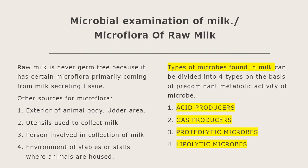Raw milk is generally never germ-free. It is never the case that raw milk is sterile, because it has certain microflora primarily coming from milk secretory tissue. Other sources of microflora are the exterior of the animal body, especially the udder area where the mammary glands are present, and the person who does the milk collection job — touching the animal body or the utensils used for milk collection. Proper personal hygiene of that person also matters, as does the environment of stables or stalls where animals are housed.